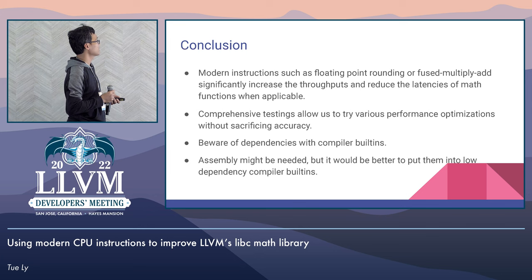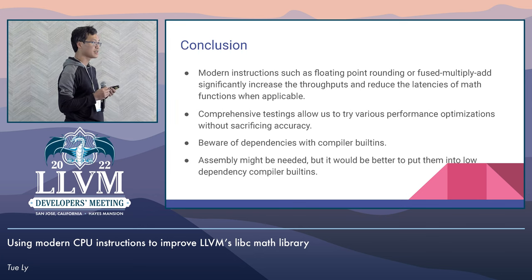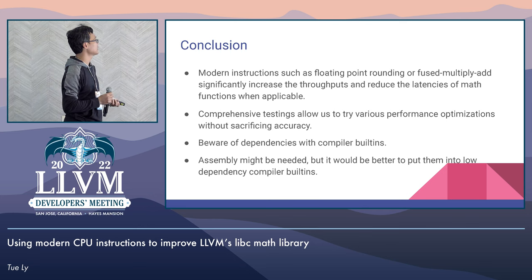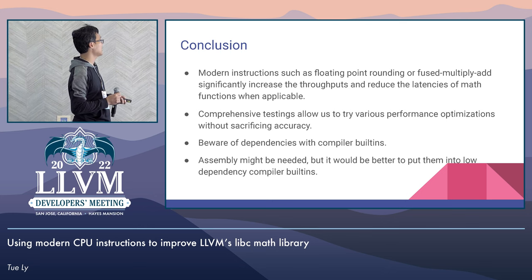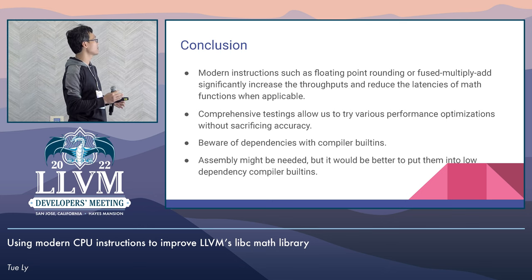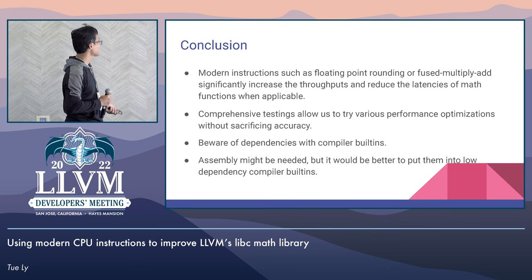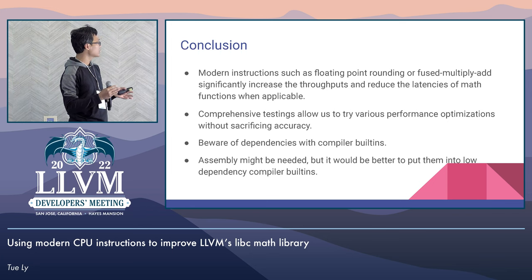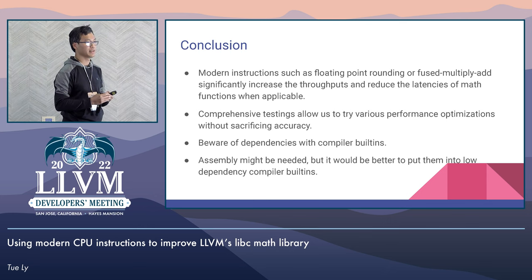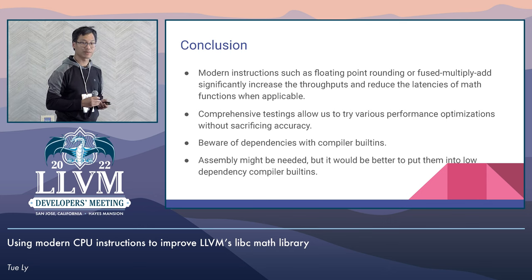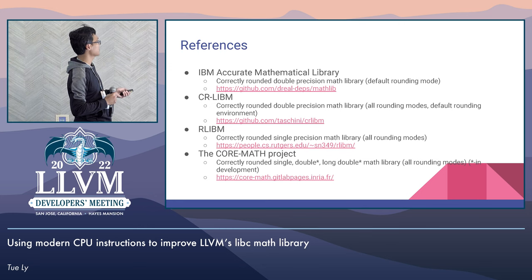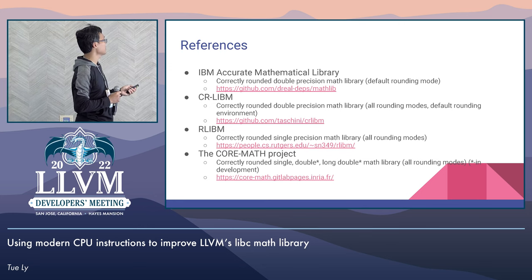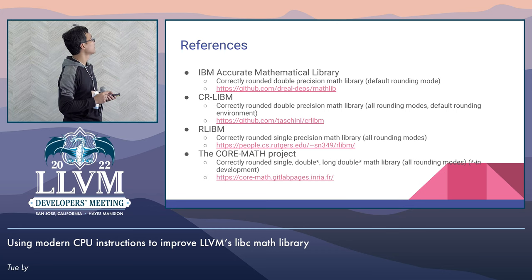In conclusion, using modern instructions such as FMA and rounding instructions, we can significantly improve the throughput and reduce the latency of math functions when applicable. With comprehensive testing with respect to accuracy, it allows us to try various performance optimizations without sacrificing accuracy. You can use compiler built-in intrinsics to access these instructions, but be careful of circular dependencies back to compiler built-ins themselves. References include other math libraries: CR-libm, Crlibm, and the Coremath project. Thank you.